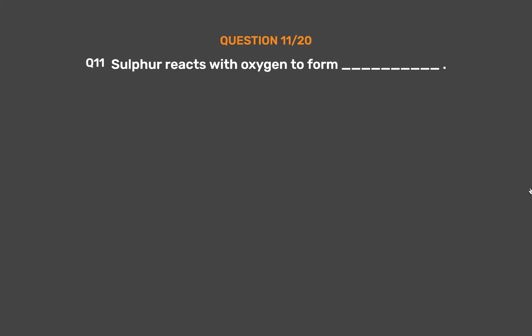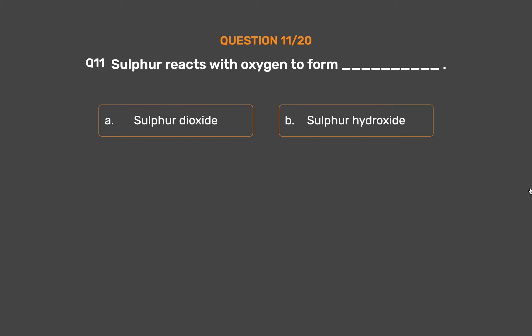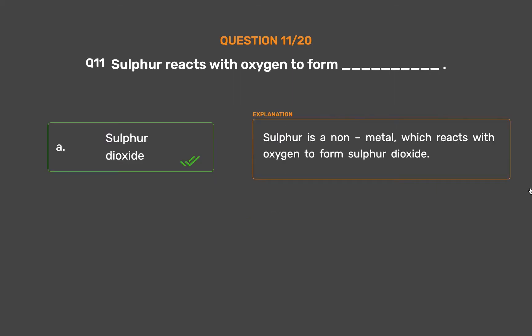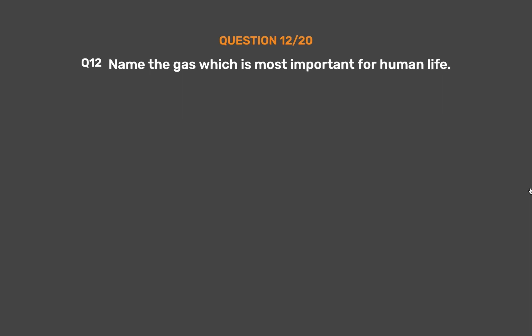Question number 11. Sulfur reacts with oxygen to form ___. Option A: Sulfur dioxide. Option B: Sulfur hydroxide. Option C: Sulfur carbonate. Option D: None of these. The correct answer is Option A: Sulfur dioxide. Sulfur is a non-metal which reacts with oxygen to form sulfur dioxide.